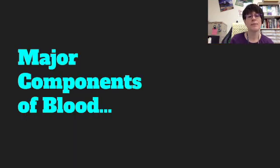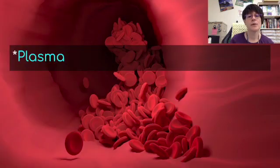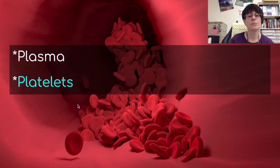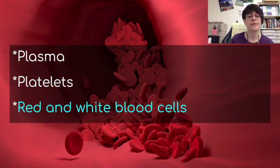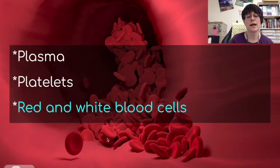Let's talk about the major components of blood. The first major component is plasma, which is the liquid part of the blood. There are also platelets, which are what cause your blood to clot. Finally, there are red and white blood cells — mostly what you see in the background are the red blood cells, which carry oxygen throughout the body. The white blood cells are part of the immune system.